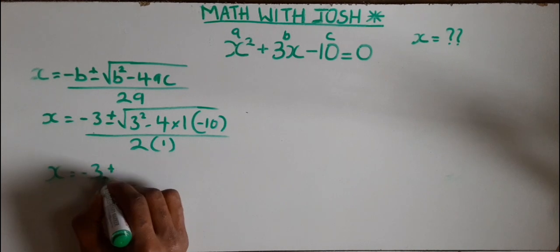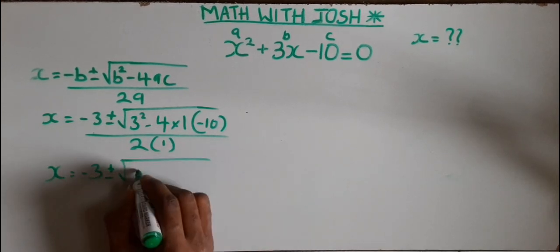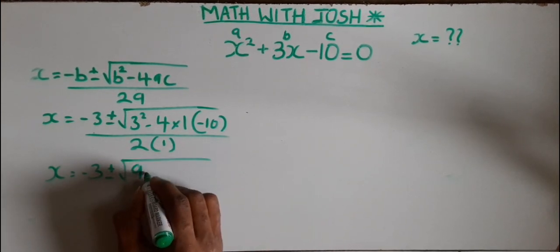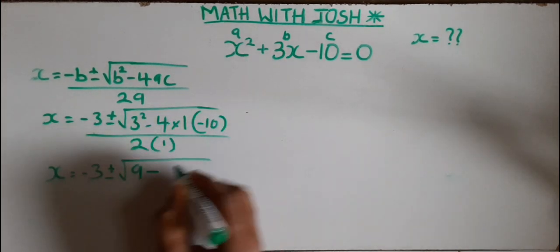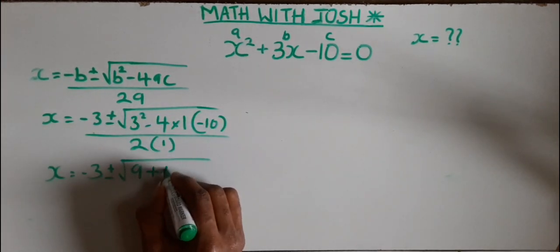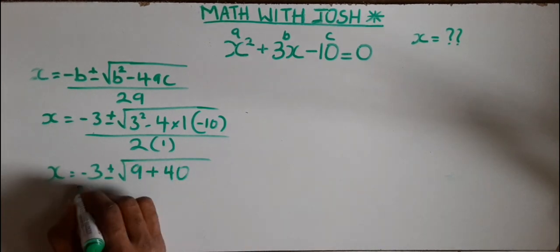Now we go straight to the solution to simplify this. 3 squared is 9, now minus 4 times 1 times minus 10 we have 40 all over 2.